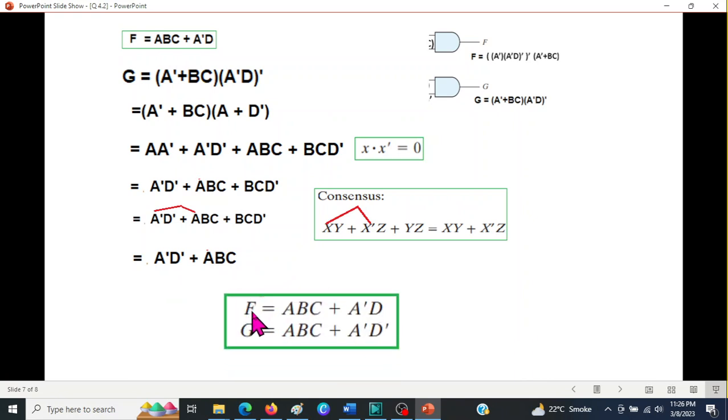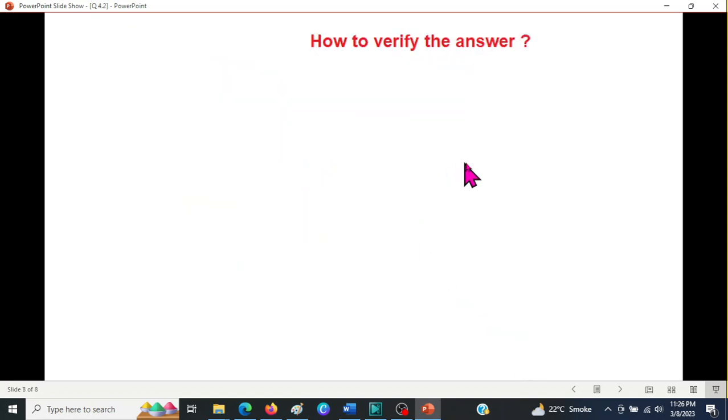And so the two answers as given in the book also. End of the chapter. So this is the answer that we have got. Now a point to remember, how do we verify that our answer is correct or cannot be simplified further?